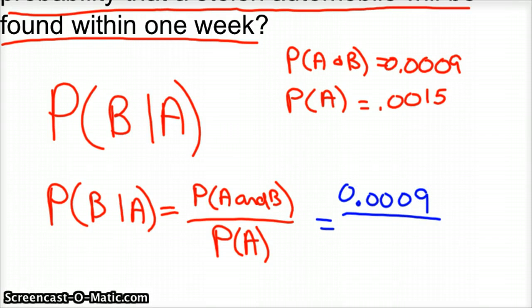And the probability of the car being stolen at all is 0.0015. Well, we already know that the car's been stolen, so we've got to divide that probability out. It's already happened.